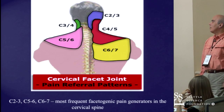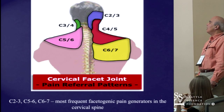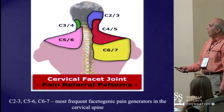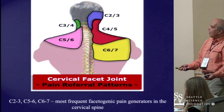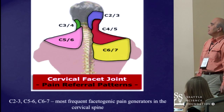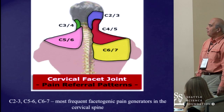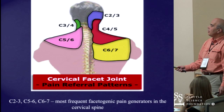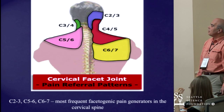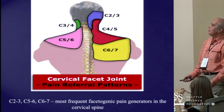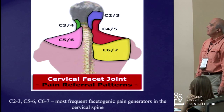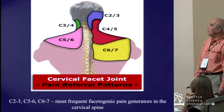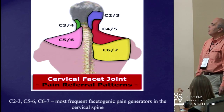These are the pain referral patterns for cervical facet joints. The C2-3, C5-6, and C6-7 joints are the most frequently involved in the generation of facetogenic pain. The C2-3 facet joint is innervated by the third occipital nerve and is the most frequent cause of cervicogenic or cervical spine-mediated headaches. The lower facet joints at C5-6 and C6-7 are also very frequently involved in the genesis of facetogenic pain.